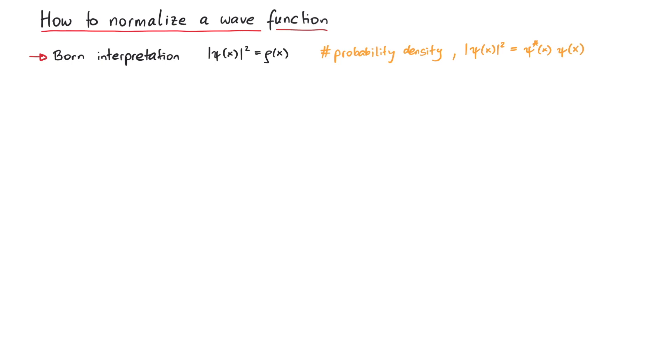Now in order to go from a probability density to a probability, we need to integrate. So if we're interested in the probability to find the particle between the points A and B, we need to integrate the probability density from A to B.